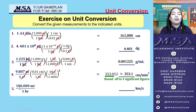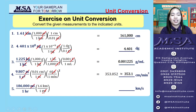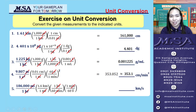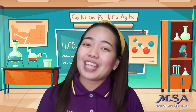For number 5, we have 186,000 miles per hour and we convert it into kilometers per second. Using the conversion factor 1 mile = 1.6 kilometers, we cancel the miles. Then we cancel the hours by converting first to minutes, then minutes to seconds. The calculation gives 82.667, and rounded to 3 significant figures the final answer is 82.7 kilometers per second. That's all for today!